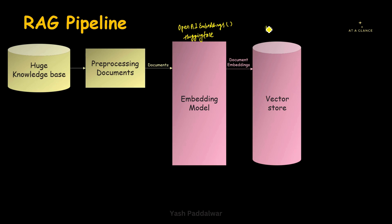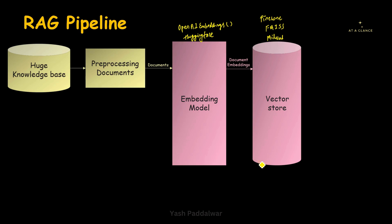Let me give you some examples of vector stores. There is FAISS — Facebook AI Similarity Search. There is also another vector store called Milvus. Apart from this, there is Pinecone and multiple other vector stores present worldwide. We can use any one of them and store the document embeddings in the vector databases. Once we are done with this, our vector store is ready — we are done with the data that was actually required.